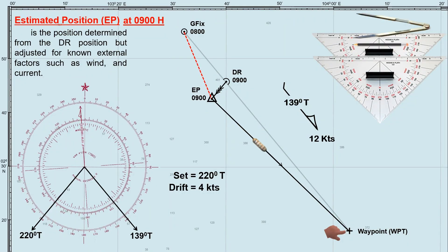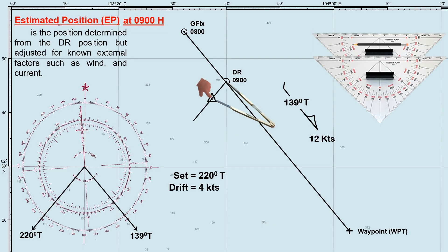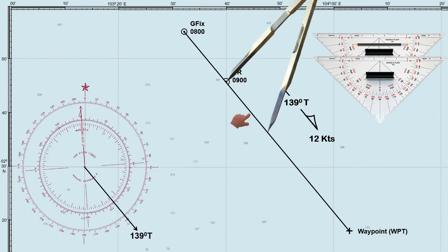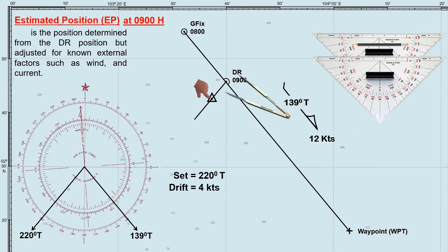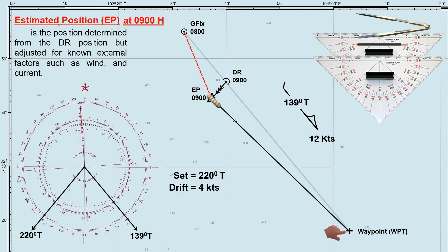In this video, we'll be discussing two essential navigational concepts: the dead reckoning position and the estimated position. Each of these methods plays a vital role in determining a ship's position at sea, especially when primary tools like GPS are unavailable. We'll break down the differences between them, how they are used in navigation, and why it's important to understand these distinctions for safe and effective passage planning.